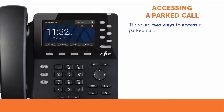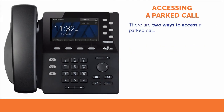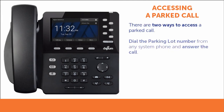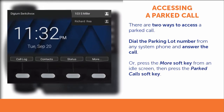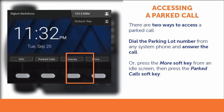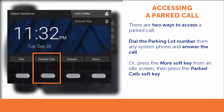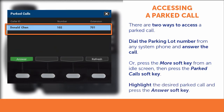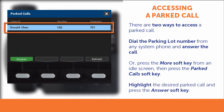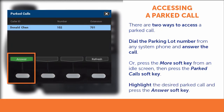There are two ways to access a parked call. On any system phone, dial the parking lot number and answer the call. Or, from an idle screen on any system phone, press the More soft key, then the Parked Call soft key. Highlight the parked call, and press the Answer soft key.